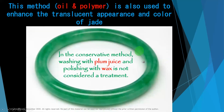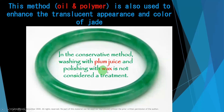This one is jade. The oil and polymer method is also used to enhance the translucent appearance and color of jade, which is very expensive. In the traditional method, washing with plum juice and polishing with wax is not considered a treatment for jade. This is a jade bangle.